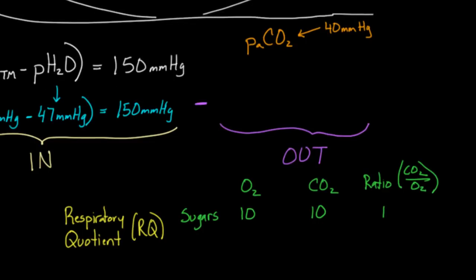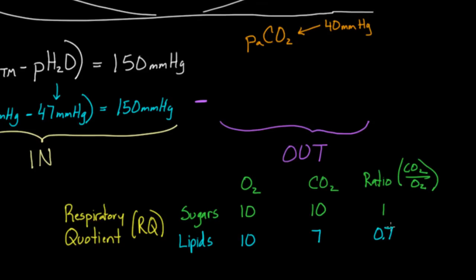Now, let's say instead of sugars, my diet consists of fats and lipids and things like that. So a slightly different diet. Well, it turns out that now my body is actually a little bit more efficient. And by that, what I mean is that with 10 molecules of oxygen used, your body only makes 7 molecules of carbon dioxide. So it's actually a lot better than before, less waste. And so the ratio ends up being better, 0.7. So the ratio is actually lower with lipids.